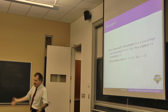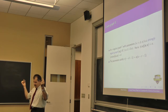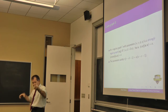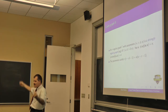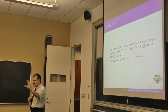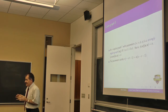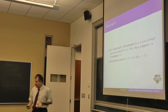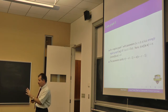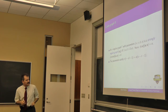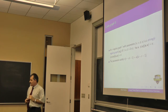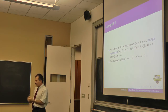A regular graph is strongly regular if and only if there are two fixed parameters E and D such that any two adjacent vertices have the same number of common neighbors E, and any two non-adjacent vertices have D common neighbors. These parameters must satisfy a fixed Diophantine equation: R(R − D − 1) = E(V − R − 1), where V is the number of vertices, R is the degree, E is the parameter for adjacent vertices, and D for non-adjacent.